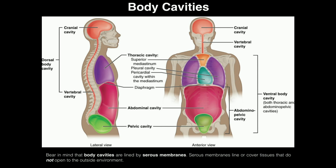Now let's move on to body cavities. A body cavity is just a space — not necessarily empty, as they have things in them. For example, the cranial cavity has the brain in it. These cavities are just spaces where things might be stored. Here is a lateral view of a person; let's look at some of the cavities visible from this view. Obviously, in the skull we have the cranial cavity.